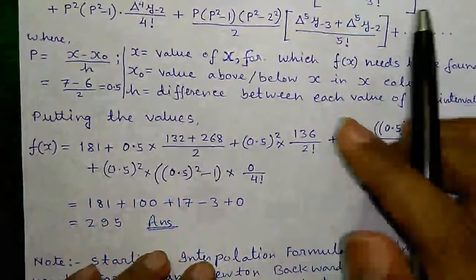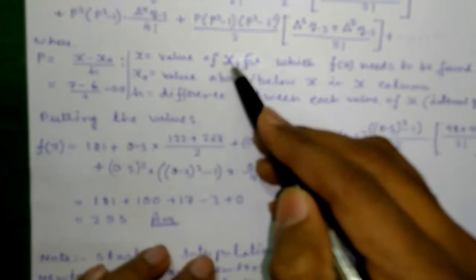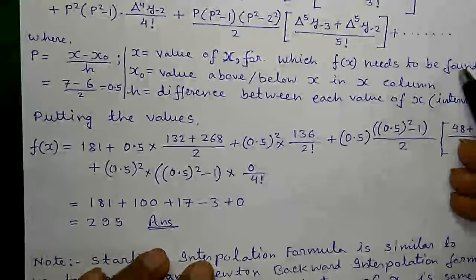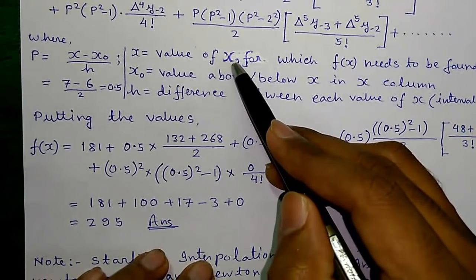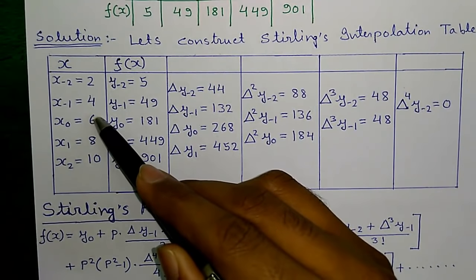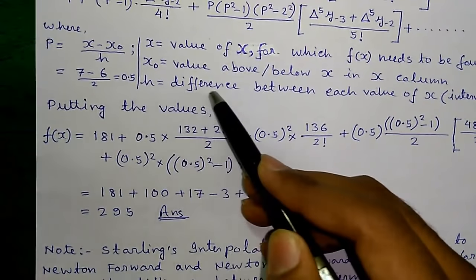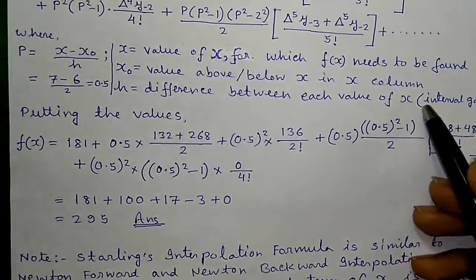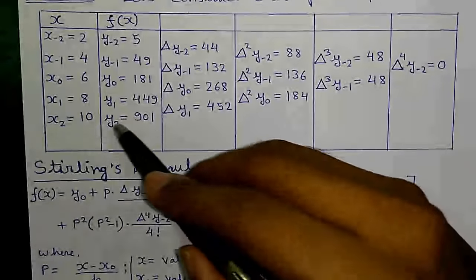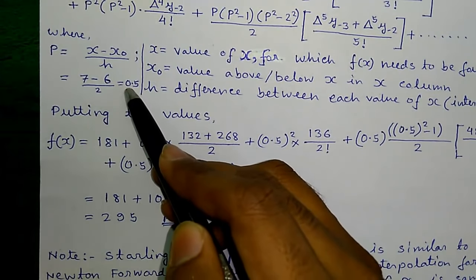Here p equals to (x − x₀)/h, where x is the value of x for which f of x needs to be found. So here we have to find f of x for x equals to 7. x₀ is the value just above or below x in the x column, so here x₀ is 6, which is above our required value x equals to 7. h is the difference between each value of x, also called the interval gap. Here h equals to 2. So p equals to (7 − 6)/2 = 0.5.